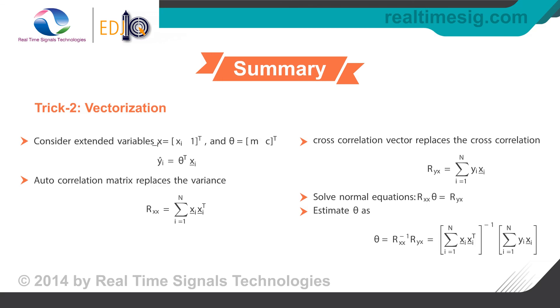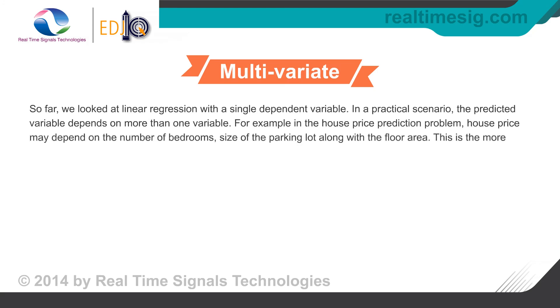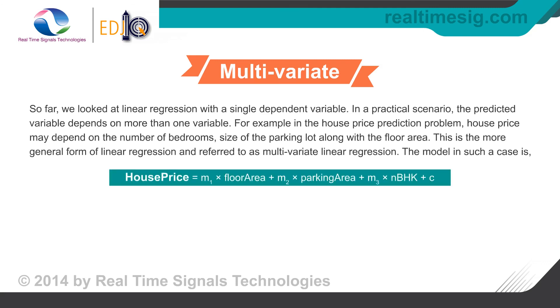So far, we looked at linear regression with a single dependent variable. In a practical scenario, the predicted variable depends on more than one variable. For example in the house price prediction problem, house price may depend on the number of bedrooms, size of the parking lot along with the floor area. This is the more general form of linear regression and referred to as multivariate linear regression. The model in such a case is house price equals m1 times floor area plus m2 times parking area plus m3 times nbhk plus c.